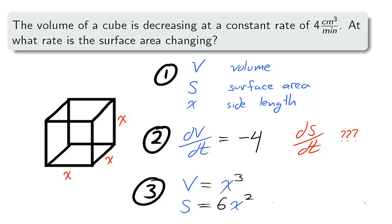Three. We need two equations to connect volume and surface area in a cube. The volume is equal to the side length cubed, and for the surface area, a cube has six sides, each of area X squared. So the surface area is equal to 6 times X squared.